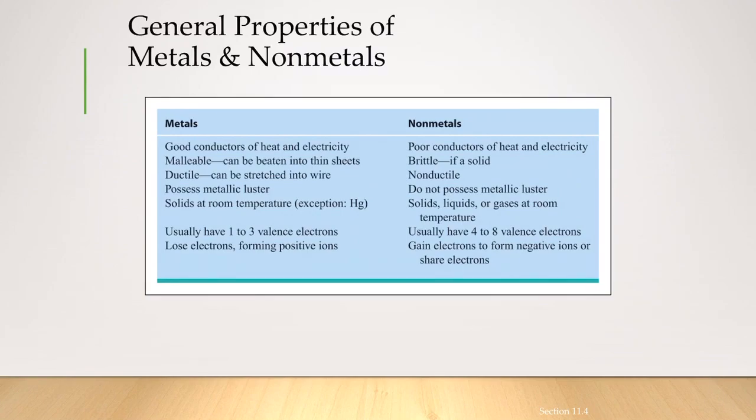Metals possess metallic luster, whereas non-metals do not possess any kind of luster. Metals are usually solid at room temperature. The only exception that we have is mercury. And non-metals are mostly solids, liquids, or gases at room temperature.